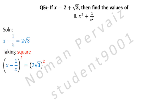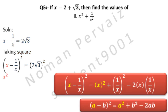Here we apply the formula: (a − b)² = a² + b² − 2ab. So we write x squared, plus 1 over x squared — since 1 squared is 1 and x squared is x squared, we write 1 over x squared — minus 2, because x and x cancel leaving minus 2. The right side is (2 under root 3) squared.